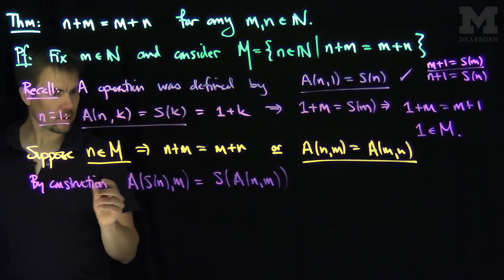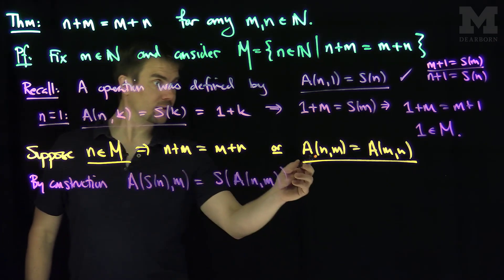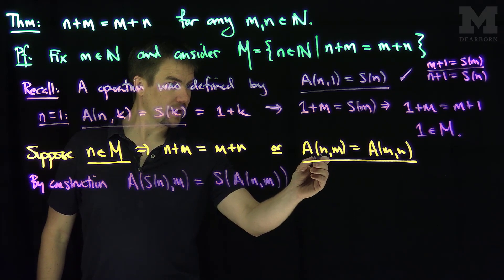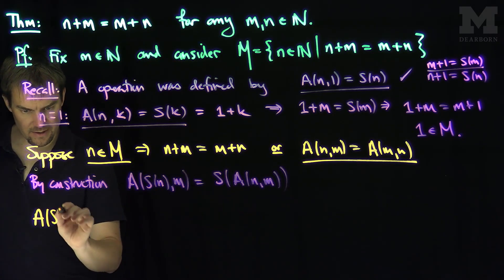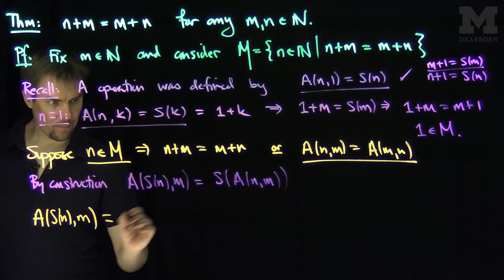So now, let me look at what? I need to look at the sum of, I need to look at A of S(n). Now, A of S(n) in m, well, by construction, what will this be?